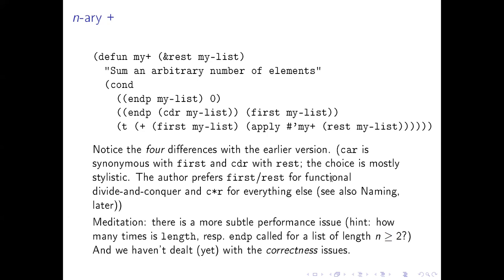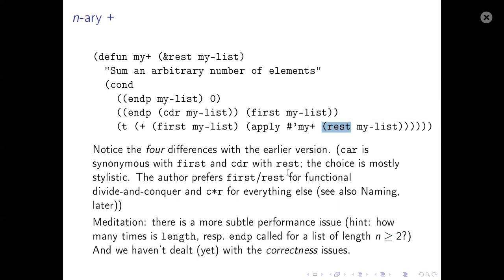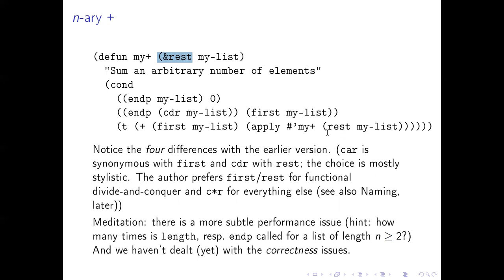A question: why the &rest on the definition with the ampersand? Those two uses of 'rest' are totally unrelated — not even remotely the same thing. The &rest in the lambda list is a completely different concept. We shall see more examples of the ampersand keywords. There are a small number supported in Emacs Lisp and a larger number in Common Lisp. The plain rest function is just a normal function that takes a list and removes the first element and returns the remainder — exactly the same as CDR.